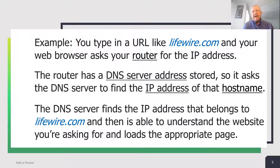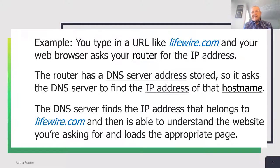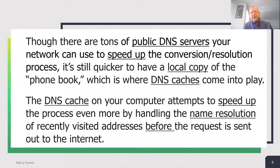For example, you type in a URL like lifewire.com, and your web browser asks your router for the IP address. The router has a DNS server address stored, so it asks the DNS server to find the IP address of that host name. The DNS server finds the IP address that belongs to lifewire.com, and then is able to understand the website you're asking for and loads the appropriate information. That's how the process works.